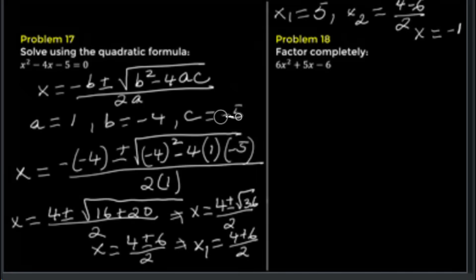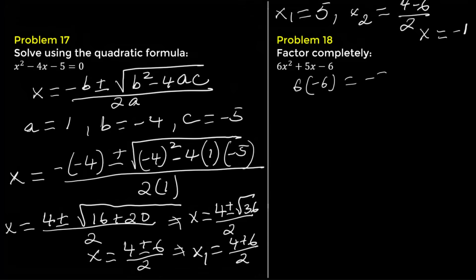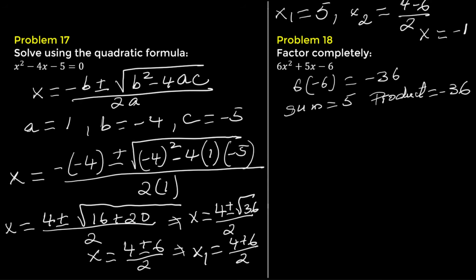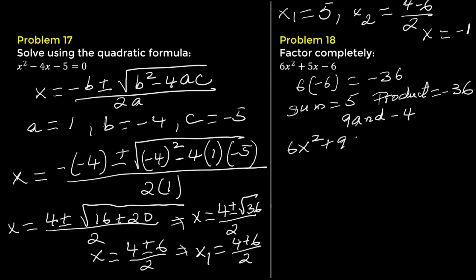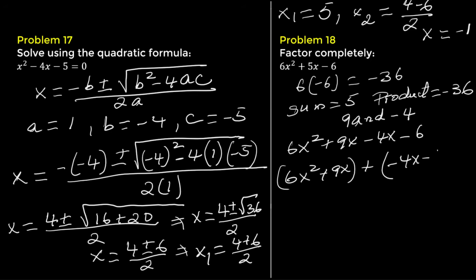Problem 18. Factor completely: 6x squared plus 5x minus 6. We know a equals 6, b equals 5, and c equals negative 6. Multiply 6 times negative 6 to get negative 36. We ask which two numbers multiply to negative 36 and add to positive 5 — those numbers are 9 and negative 4. Rewrite the middle term 5x as 9x minus 4x, giving 6x squared plus 9x minus 4x minus 6. Group the first two terms and the last two terms.